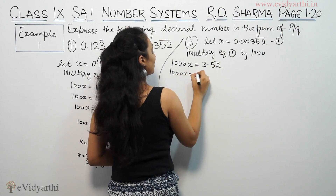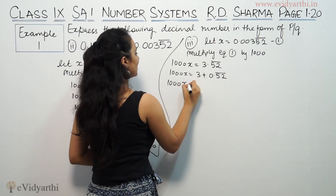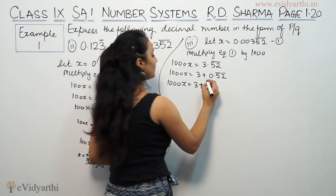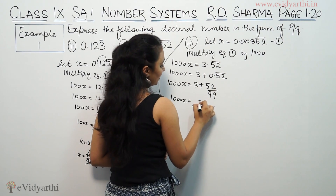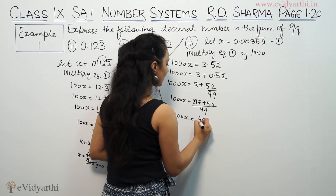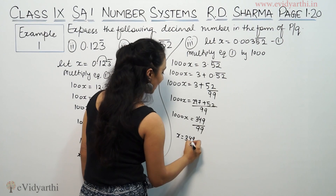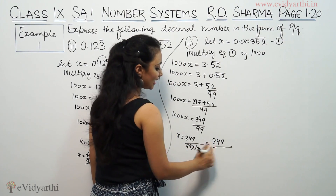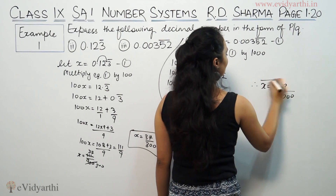So 1000x is equal to 3 plus 0.52 bar. Solving 0.52 bar gives 52 by 99, so 1000x equals 297 plus 52 all over 99, which is 349 by 99. Therefore x is equal to 349 upon 99,000.